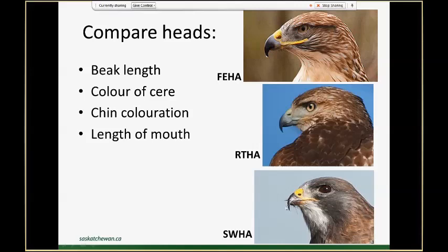The color of the cere — that patch above their beak above their nostril — can be important because Ferruginous hawks have a really large one that's often bright yellow, compared to a bluey-gray almost green on a red-tailed, and the smaller patch on a Swainson's hawk.